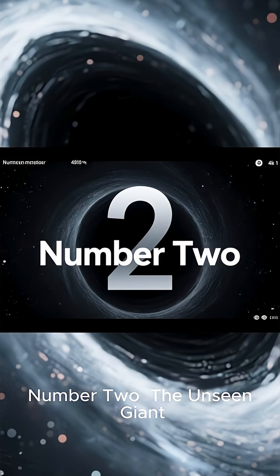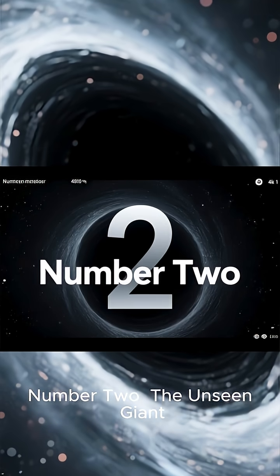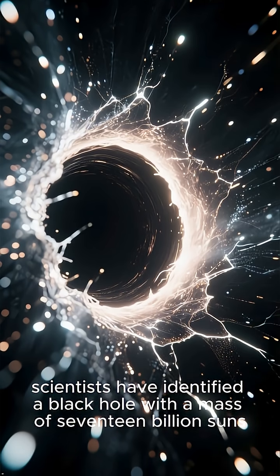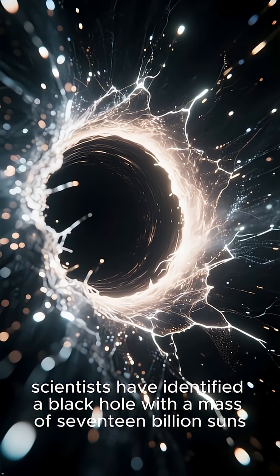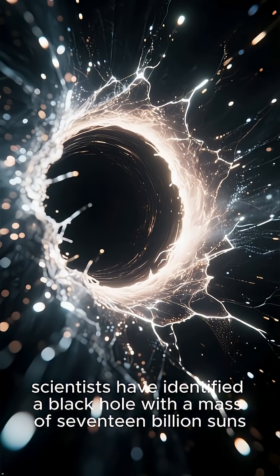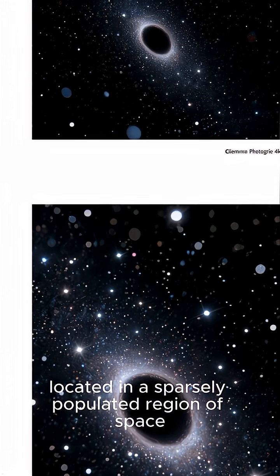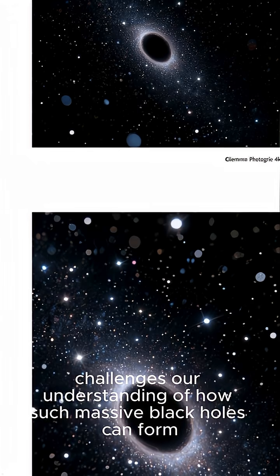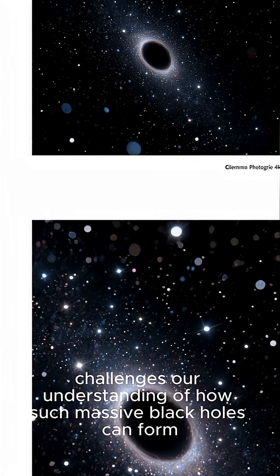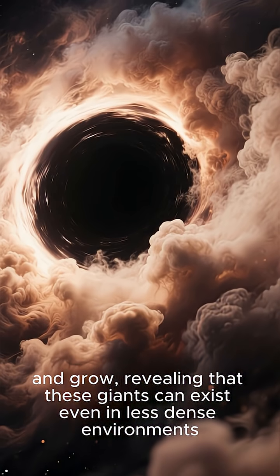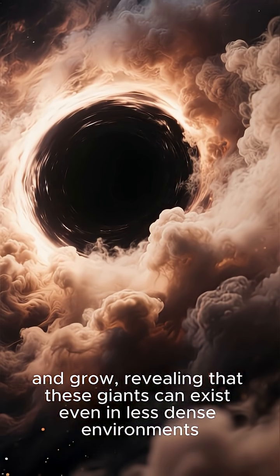Number 2: The unseen giant. Pushing the boundaries of discovery, scientists have identified a black hole with a mass of 17 billion suns. This incredible find, located in a sparsely populated region of space, challenges our understanding of how such massive black holes can form and grow, revealing that these giants can exist even in less dense environments.